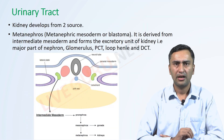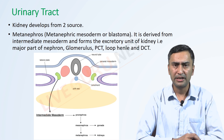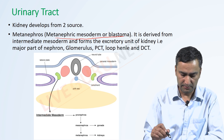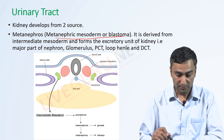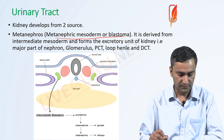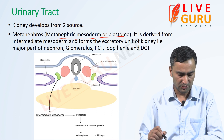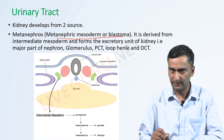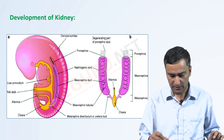The renal system is derived from the metanephros. The metanephros is derived from intermediate mesoderm. The metanephros gives two parts: one is called the metanephric blastema or metanephric mesoderm, and the other part is called the ureteric bud. The metanephric mesoderm or metanephric blastema forms the excretory unit of the kidney. The excretory unit consists of the major parts of the nephron: glomerulus, PCT, loop of Henle, and DCT.